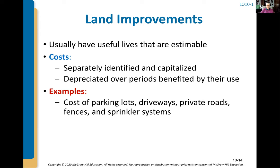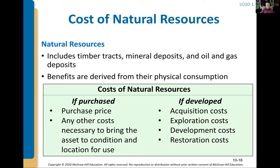For buildings, the costs are what you'd expect: purchase price, broker commissions. One area that can get fuzzy is refurbishing, remodeling, or doing work so that you can actually use the building — those costs can be capitalized as well. Those are the kind of costs that get complicated.